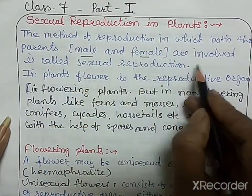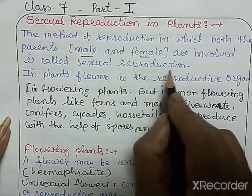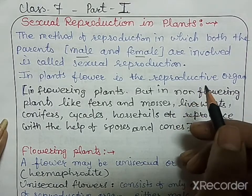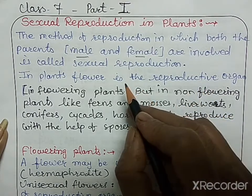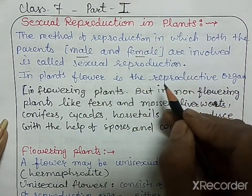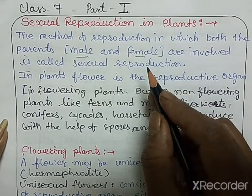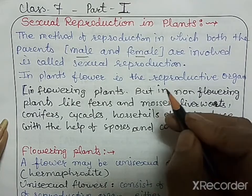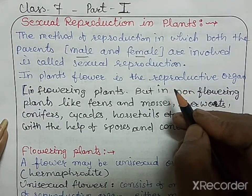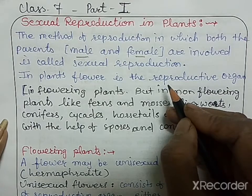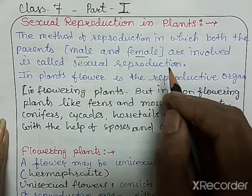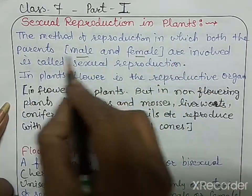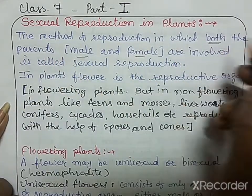In asexual reproduction, only one parent is involved, either male or female. We have also seen vegetative reproduction, in which other vegetative parts of the plant are involved. Sexual reproduction is the method of reproduction in which both parents are involved.